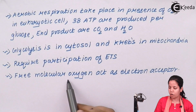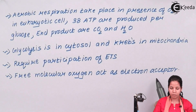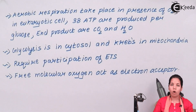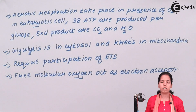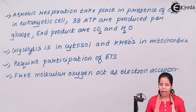Finally, free molecular oxygen acts as the final electron acceptor in aerobic respiration, which is different from anaerobic respiration where this doesn't happen. In other words, oxygen is always the last electron acceptor in aerobic organisms, whereas in anaerobic respiration, oxygen is never the last electron acceptor.